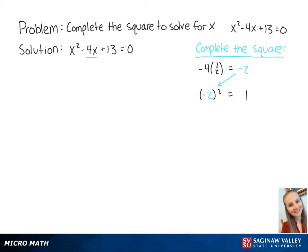This equals 4. Now we add 4 to both sides of the equation to get x squared minus 4x plus 4 plus 13 equals 4. Now we can complete the square to make this equal to x minus 2 squared plus 13 equals 4.